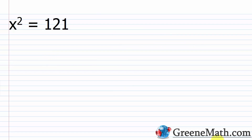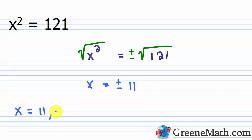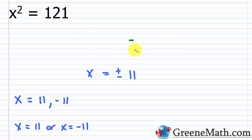Let's take a look at an example. Suppose we had x squared equals 121. If I want to solve this for x, I take the square root of the left side, and plus or minus the square root of the right side. This gives x equals plus or minus the square root of 121, which is 11. So we get x equals 11 or x equals negative 11. You can leave it in the compact form, write it as x equals 11 comma negative 11, or use the 'or' keyword — all of these notate the same thing.